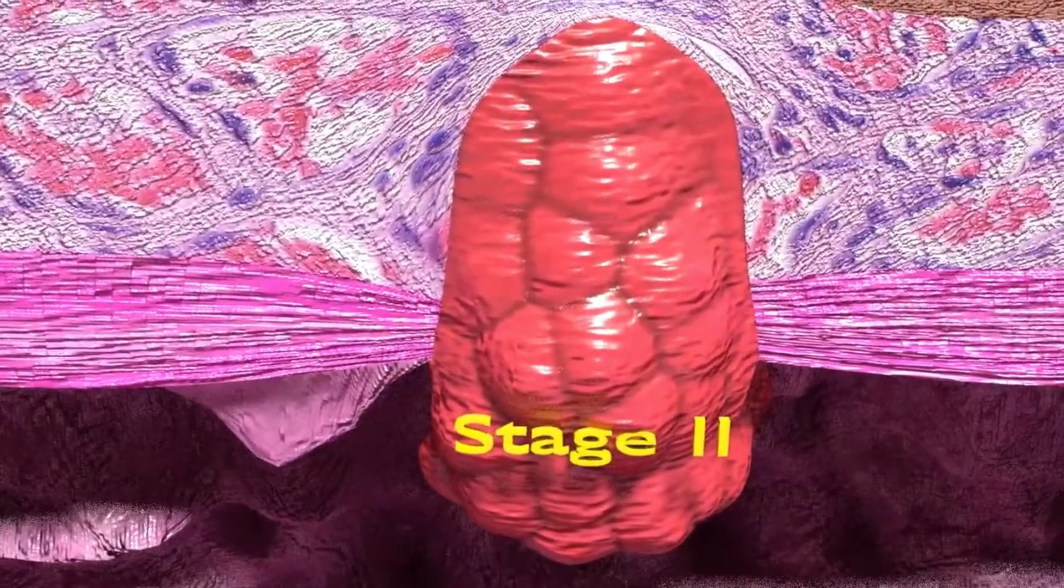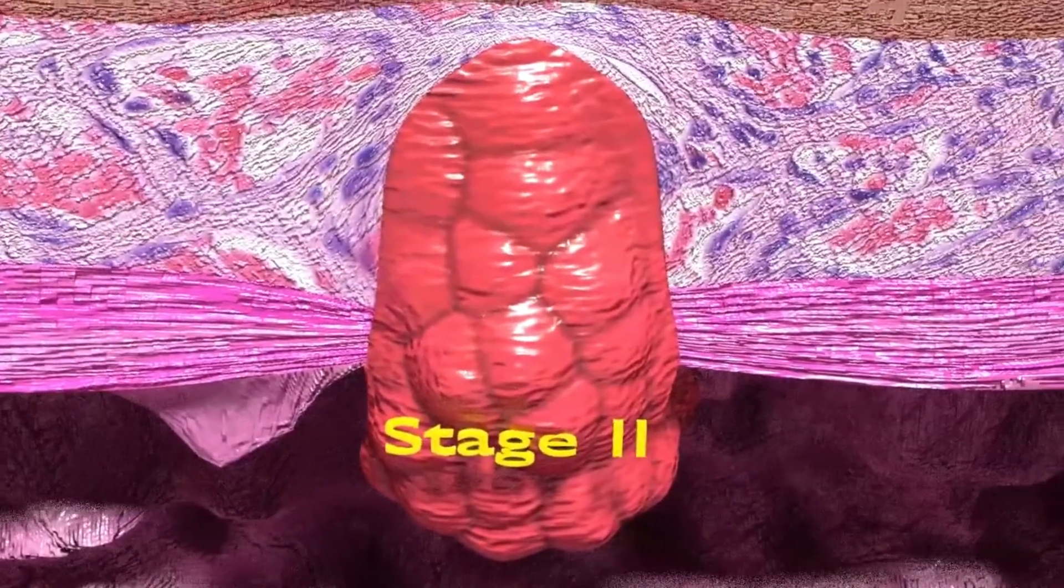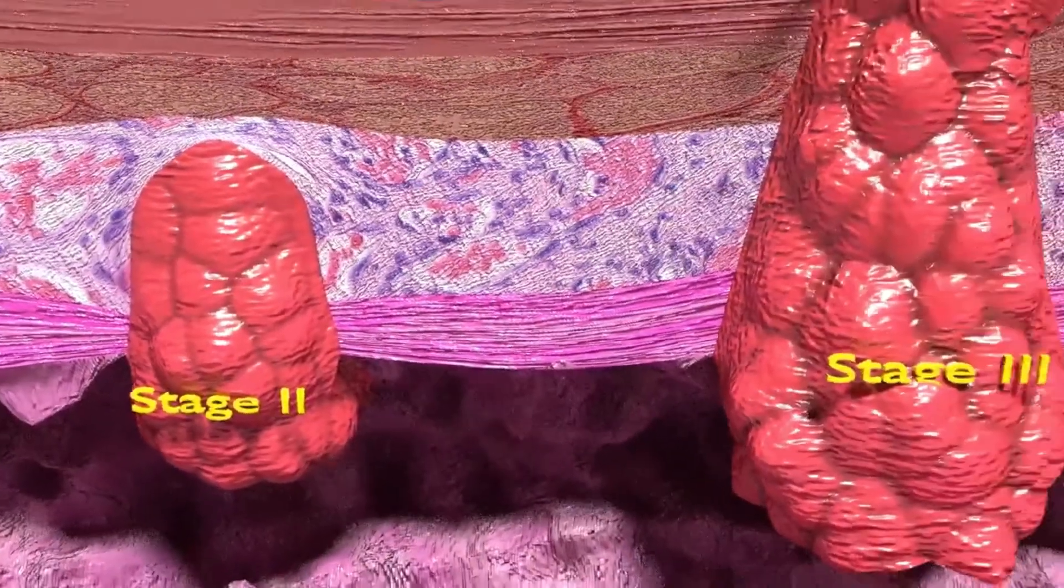Stage 2 sees the tumor initiating invasion towards muscularis propria and growing into large adenomatous polyp.